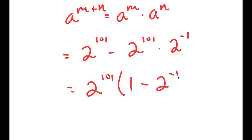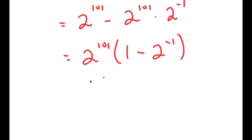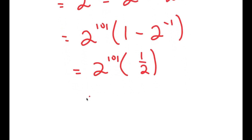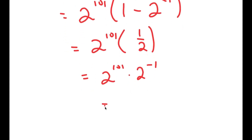This gives us minus 2 to the power of negative 1, which is equal to 2 to the power of 101 times 1/2, which is equal to 2 to the power of 101 times 2 to the power of negative 1, which equals 2 to the power of 100. So that's the second method of solving this problem.